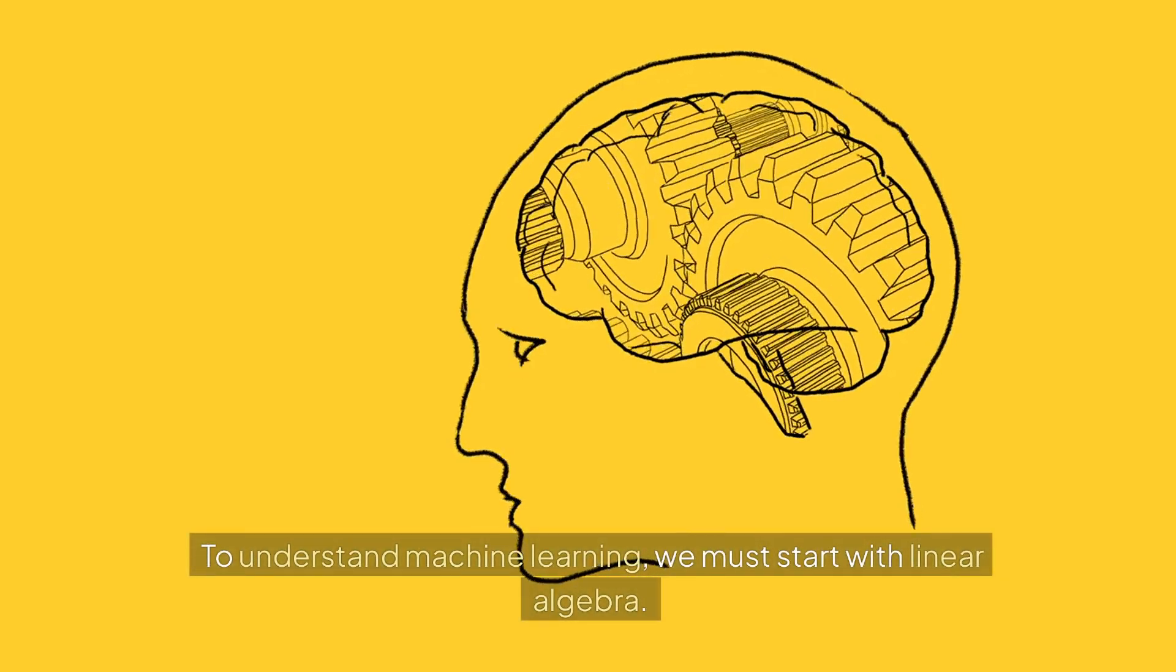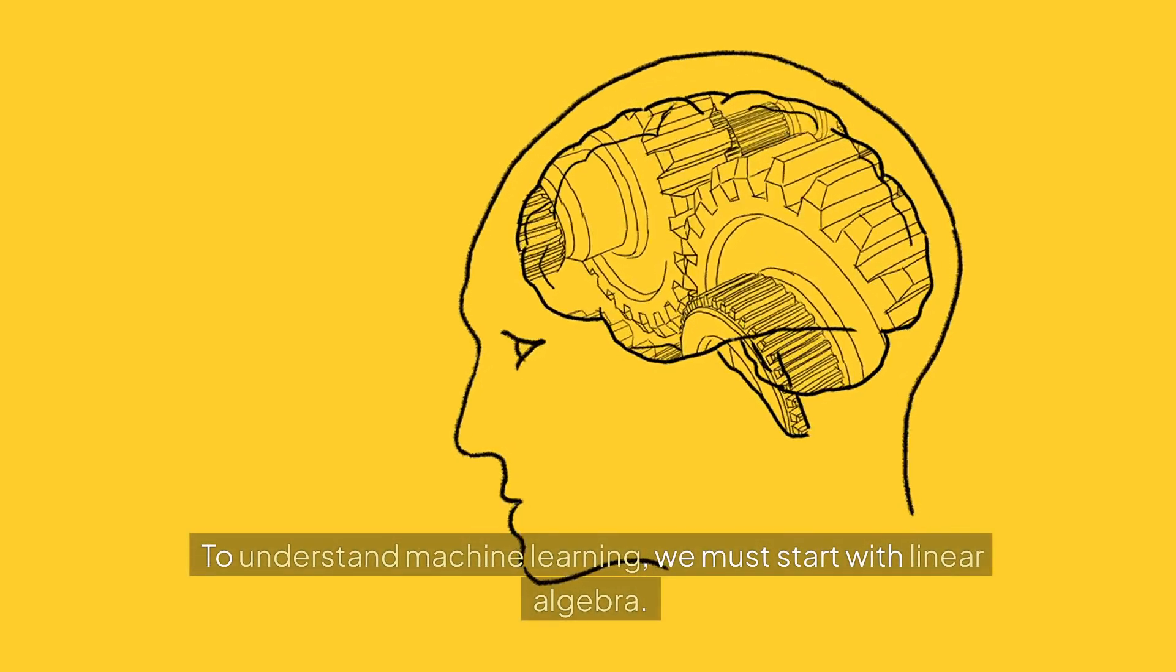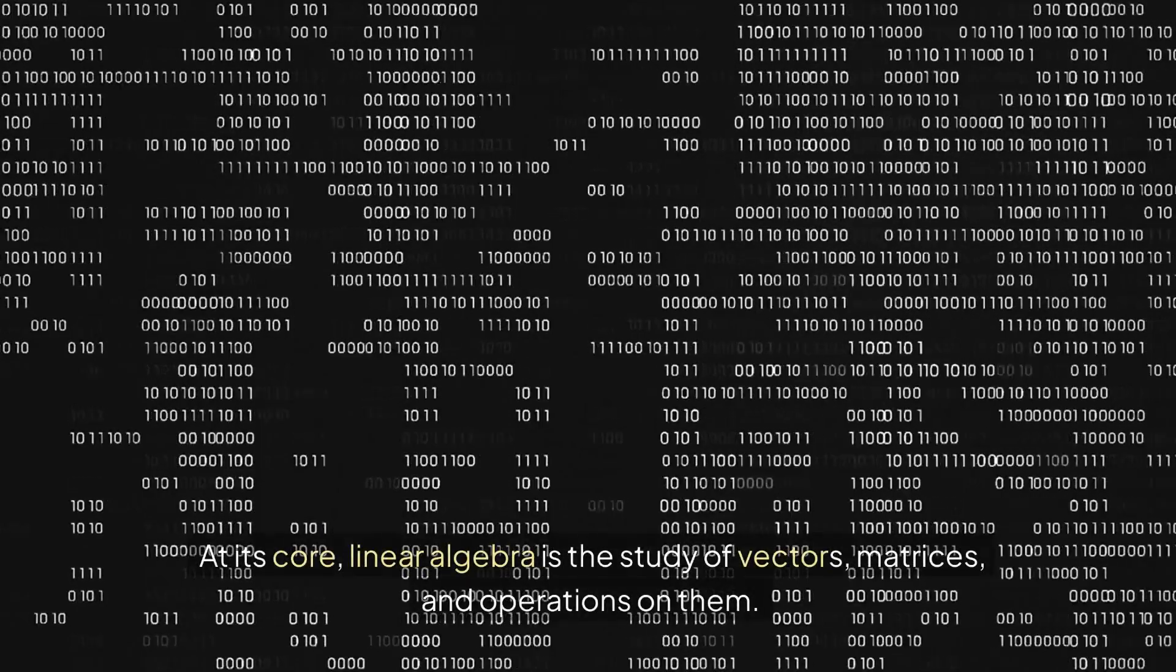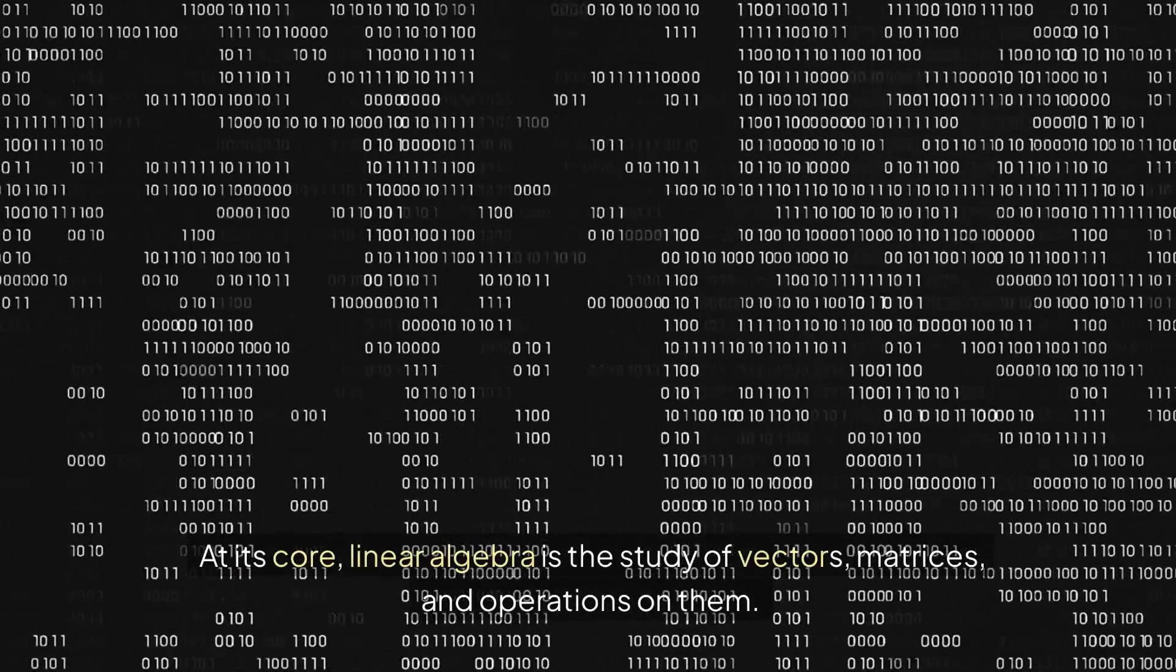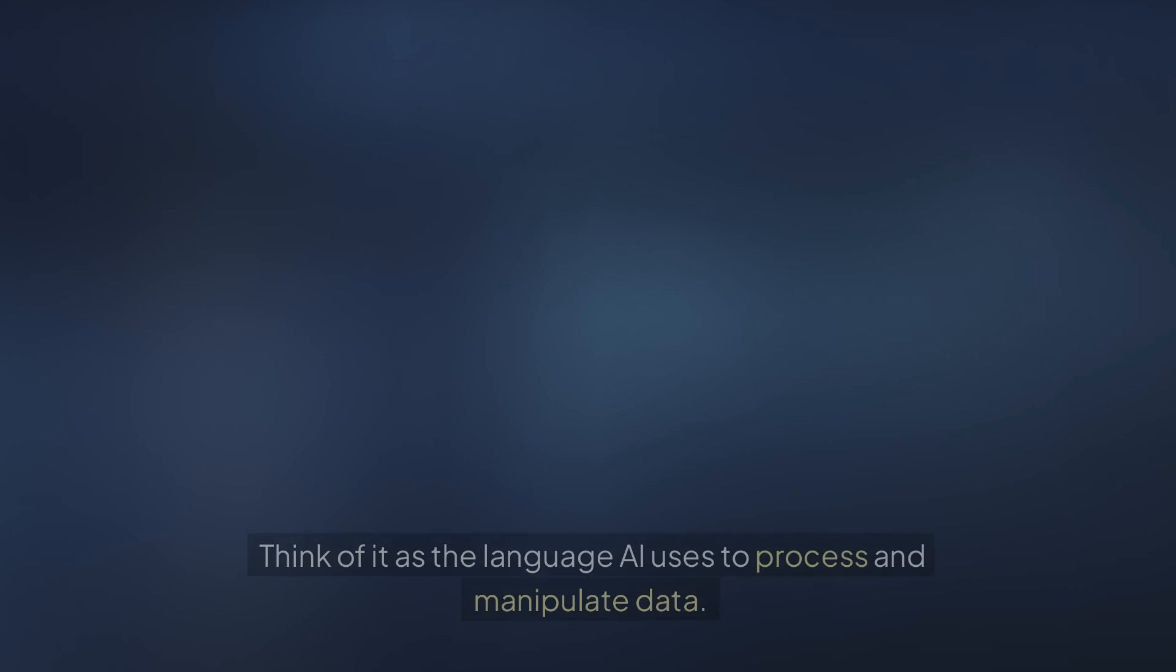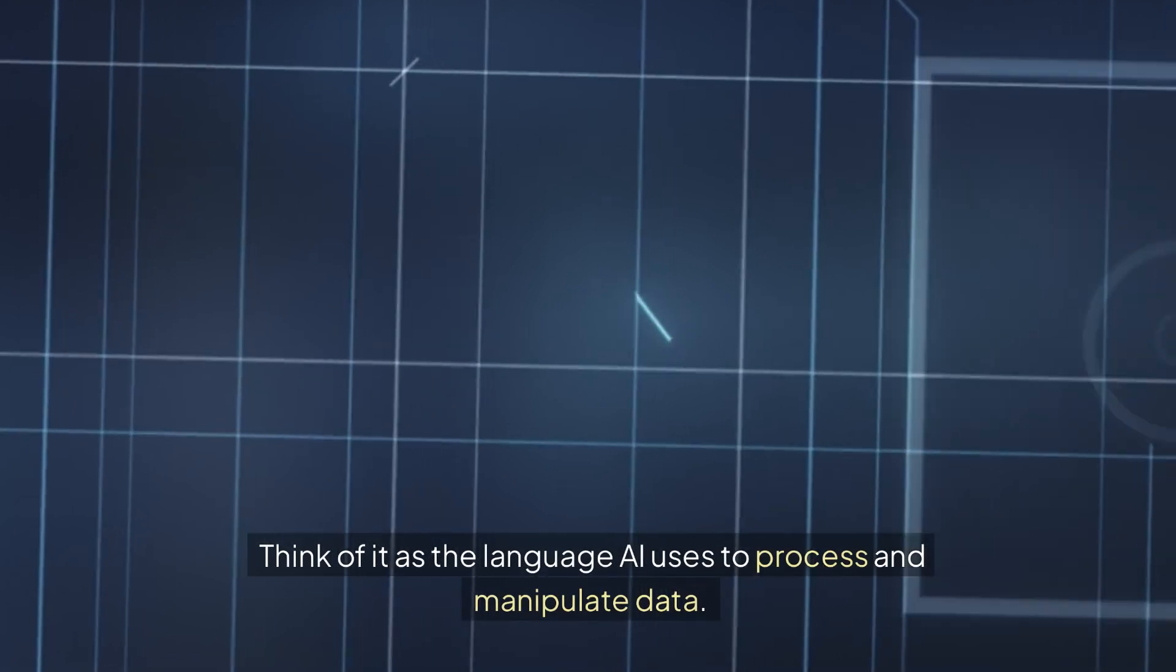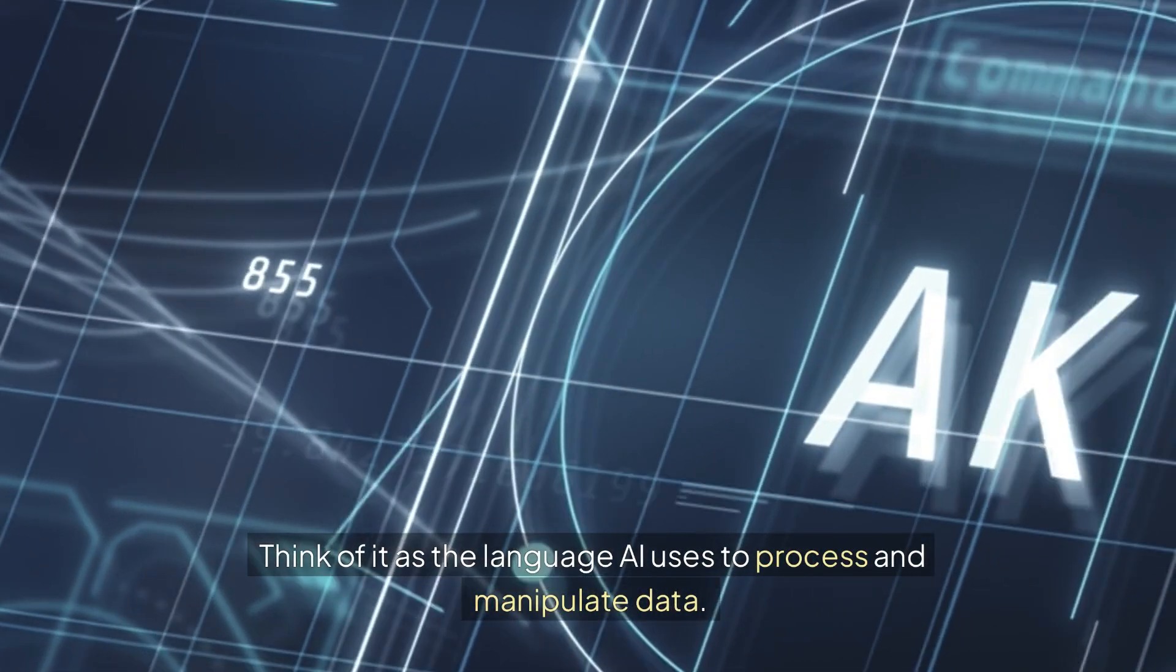To understand machine learning, we must start with linear algebra. At its core, linear algebra is the study of vectors, matrices, and operations on them. Think of it as the language AI uses to process and manipulate data.